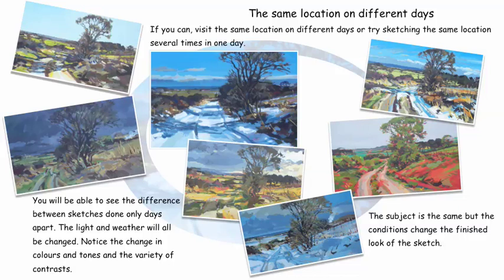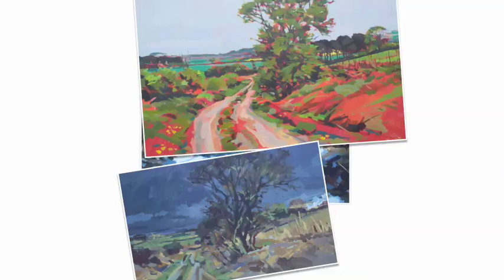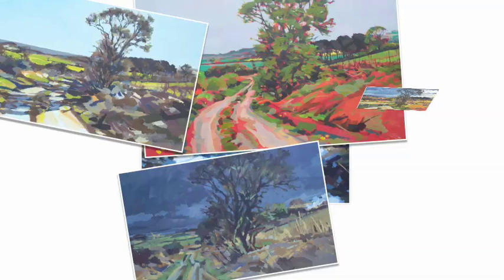The same location on different days. What this exercise is referring to is how different the images are, even if you paint several images on one day or the same location on different days. And for all these images, they look as if they're done seasons apart — they're actually just done days apart. So the subject is the same subject, but the conditions change the finished look of each sketch.